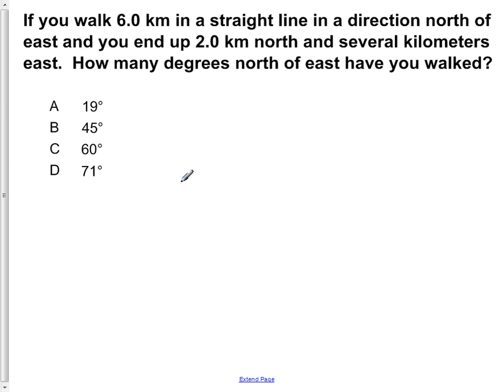If you walk six kilometers in a straight line in a direction north of east, and you end up two kilometers north and several kilometers east, how many degrees north of east have you walked?